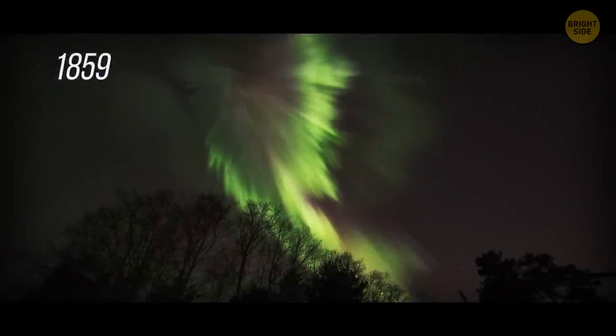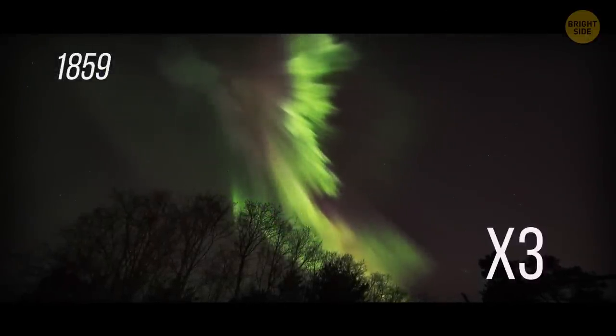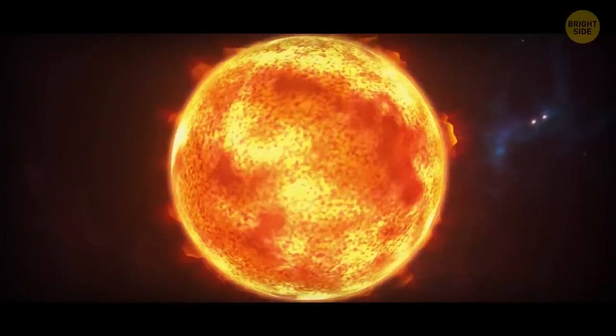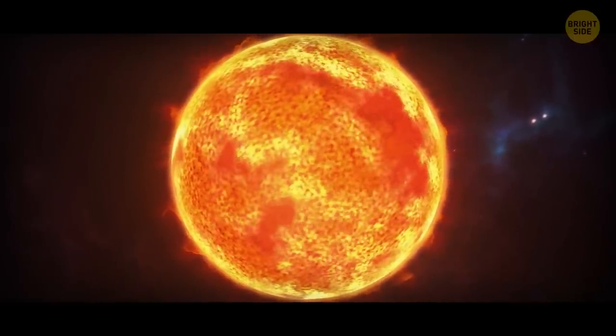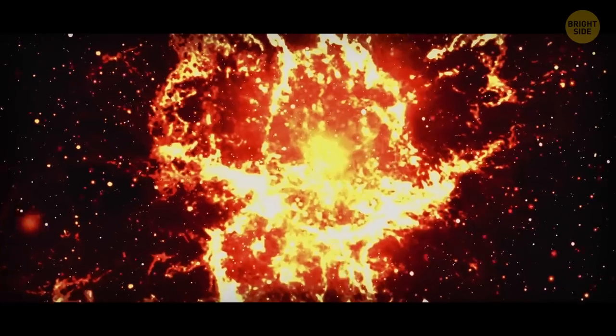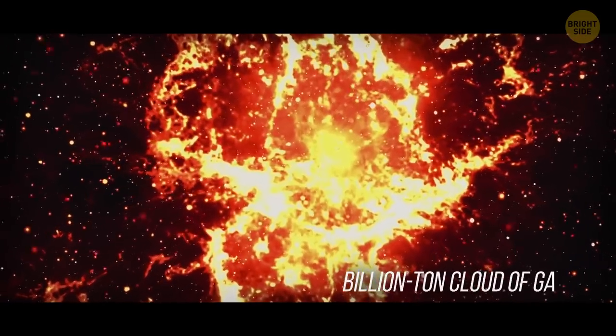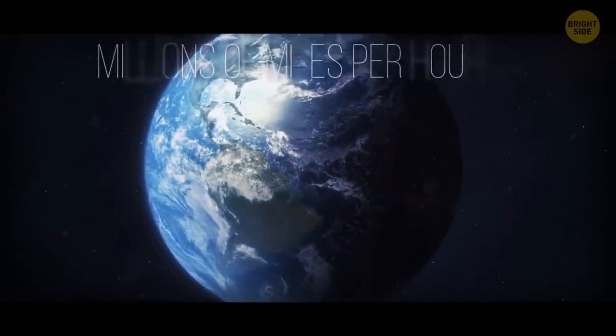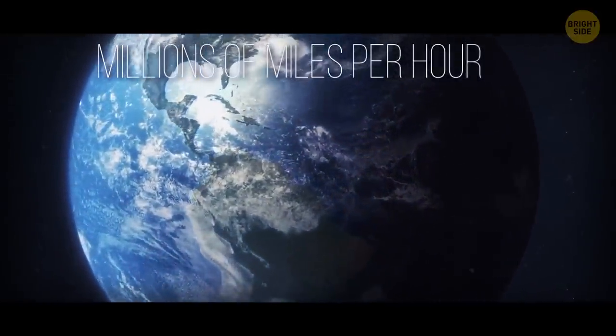The 1859 solar storm was three times more powerful than the one that happened on March 13, 1989. Three days before it began, astronomers watched a massive eruption on the sun's surface. Within a couple of minutes, a billion-ton cloud of gas was hurled away from the star. It rushed straight toward our planet at a speed of millions of miles per hour.